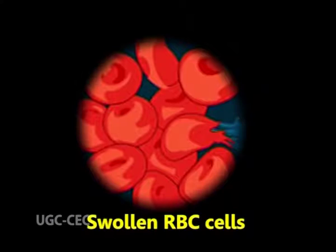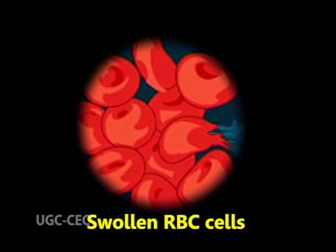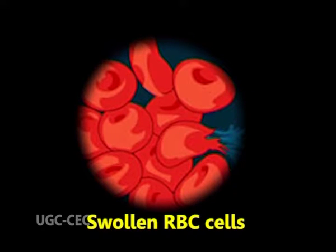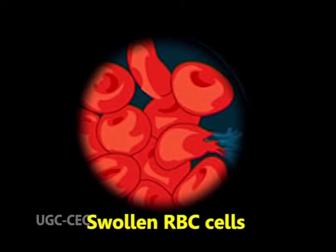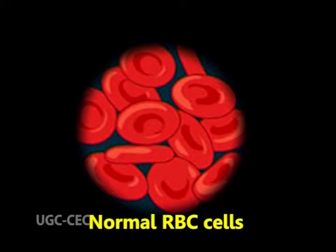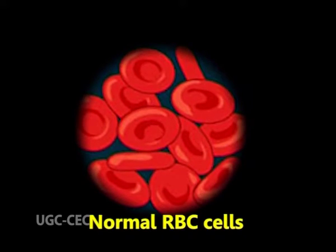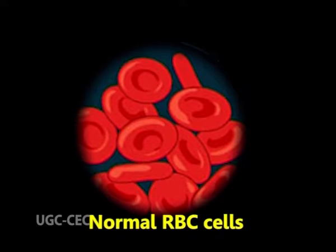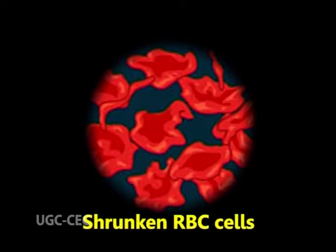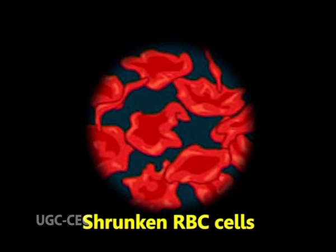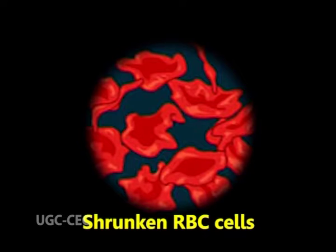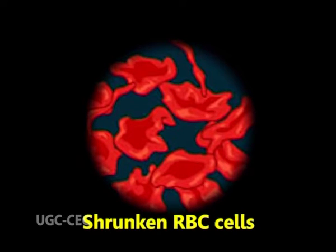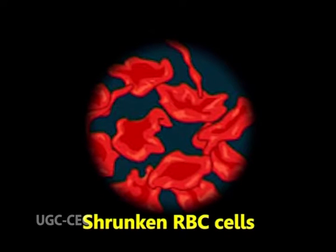Observations. In the first slide, RBCs appear larger with a round outline because the RBCs are in hypotonic solution — thus water enters into the cells, which have high solute concentration. In the second slide, the RBCs appear normal because they are in isotonic solution where the solute concentration is the same inside and outside the cell. In the third slide, RBCs appear smaller and the outline is crenated. Here the cells are in hypertonic solution where the solute concentration is higher, thus water molecules leave the cells to meet the osmotic equilibrium.